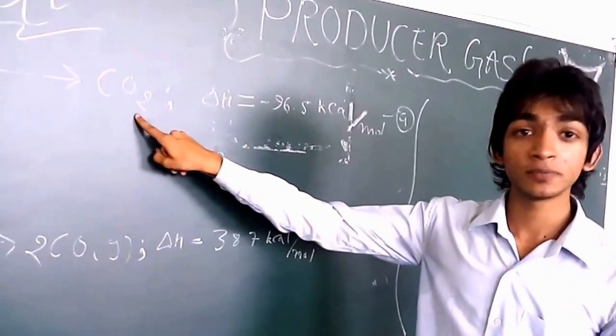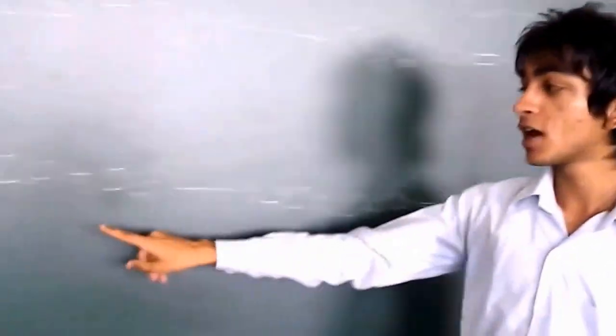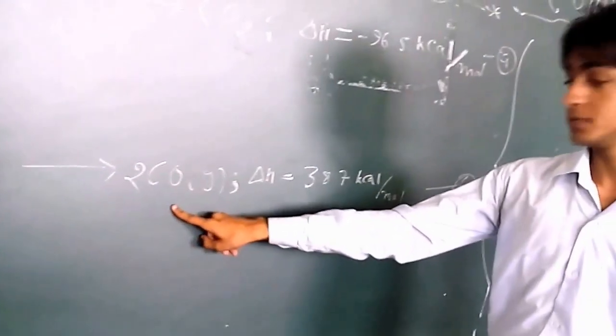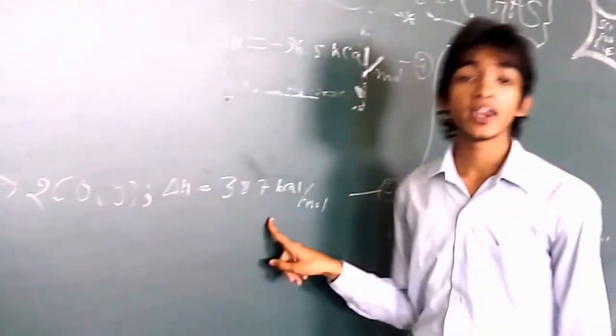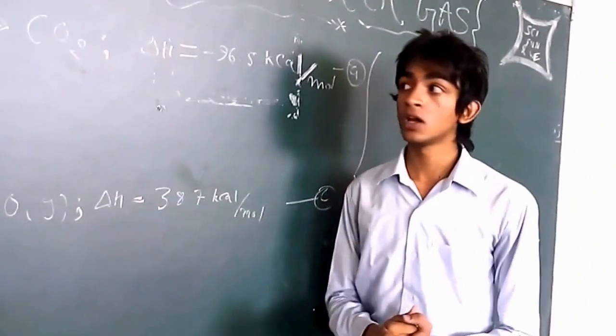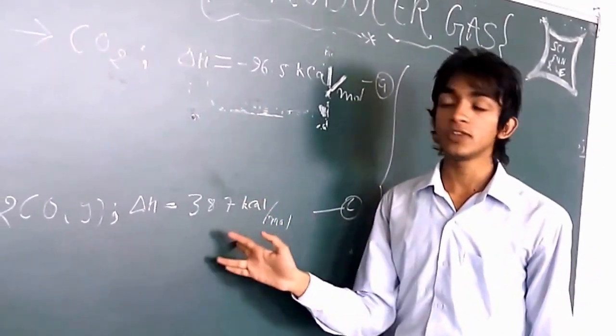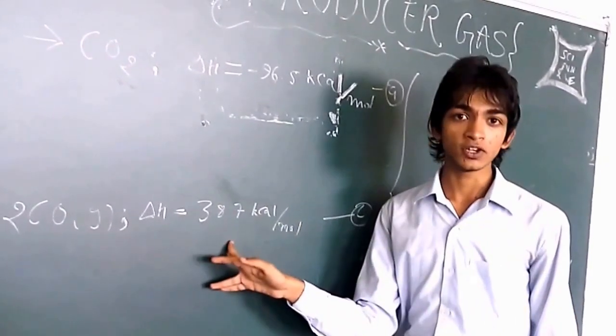What happens now? The carbon dioxide is produced. Next, carbon reacts with carbon dioxide to produce carbon monoxide and it is endothermic reaction. So energy will be used in this reaction.